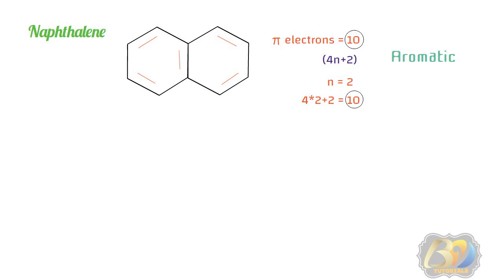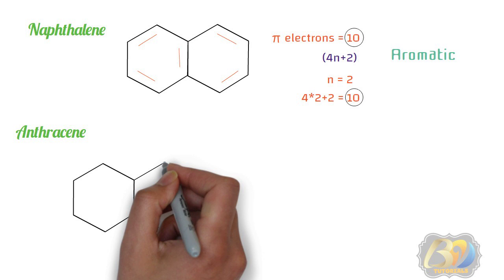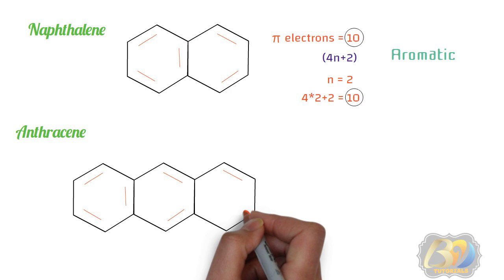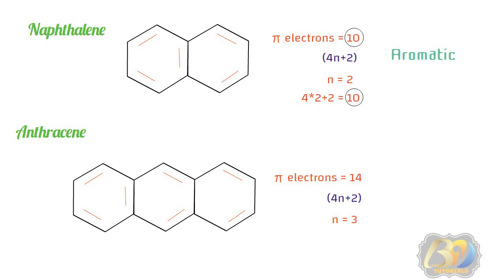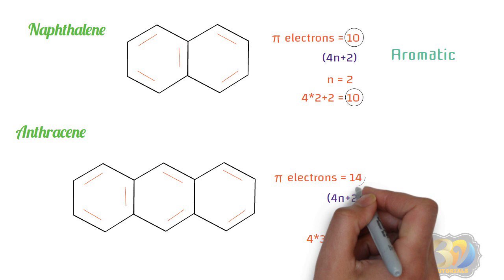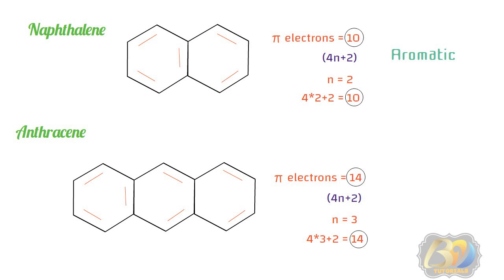Next is anthracene. Anthracene is also cyclic and planar, all ring carbon atoms are sp2 hybridized, and it contains alternate single and double bonds. Anthracene contains 7 pi bonds, meaning 14 pi electrons are present. For 4n+2 with n=3: 4×3+2 = 14. The number of pi electrons and the value of 4n+2 are the same. Hence, anthracene is aromatic.